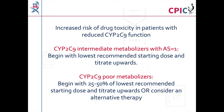Patients with reduced CYP2C9 function are at an increased risk of experiencing drug toxicity due to increased exposure to NSAIDs. Because of this, the guideline recommends that patients who are CYP2C9 intermediate metabolizers with an activity score of 1 begin NSAID therapy at the lowest recommended starting dose before titrating upwards. Patients who are CYP2C9 poor metabolizers should start NSAID therapy with 25–50% of the lowest recommended starting dose before titrating upwards. Use of an alternative therapy can also be considered for these patients.